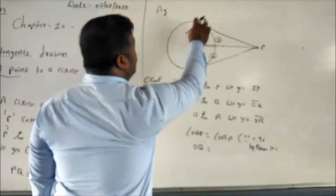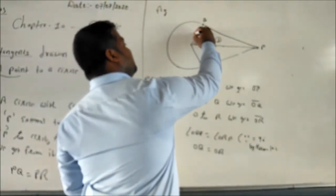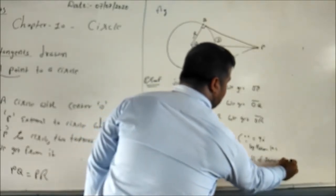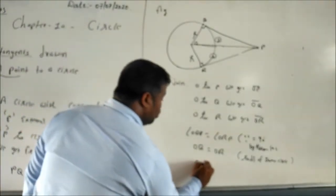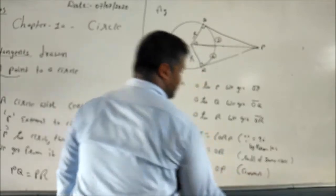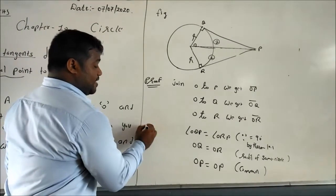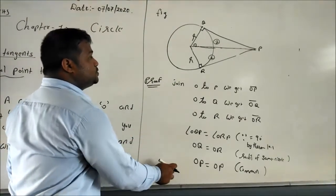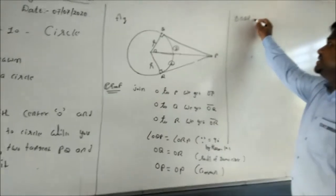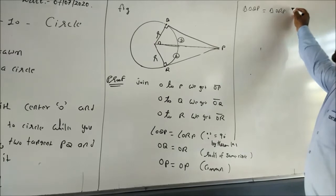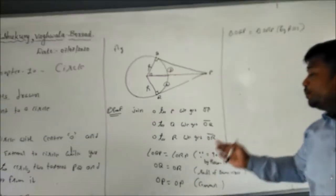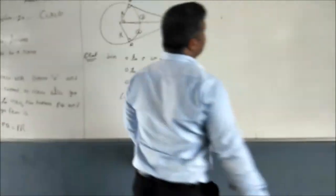OQ equals OR as radii of the same circle. OP equals OP as the common side. Since we have a right angle (90°) at Q and R, and the hypotenuse OP and one side (radius) are equal, triangle OQP is congruent to triangle ORP by RHS congruency.